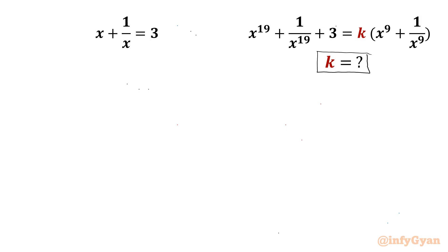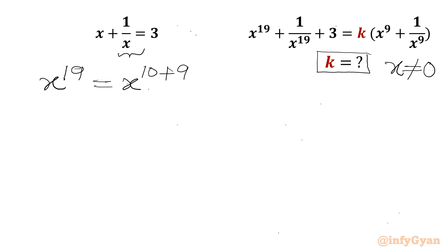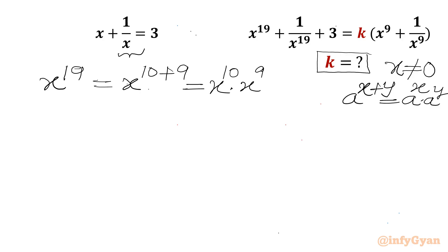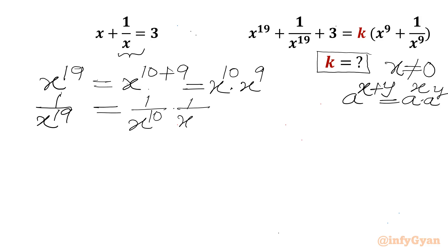Let us get started by writing x cannot be equal to 0, as we have x in the denominator. Now I will write x power 19. This we can write as x power 10 plus 9. Using the exponent property a power (x+y) equals a power x times a power y, I can write this as the product of x power 10 with x power 9. Similarly, 1 over x power 19 can be written as 1 over x power 10 times 1 over x power 9.